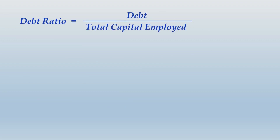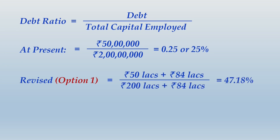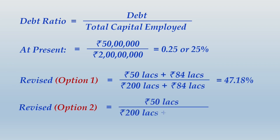Debt ratio = debt ÷ total capital employed. At present: 50 ÷ 200 = 25%. Under Option 1: 134 ÷ 284 = 47.18% — this definitely exceeds 40%, so PE ratio will decline to 9 times. Under Option 2: 50 ÷ 284 = 17.61% — well below 40%, so PE ratio remains 10 times.